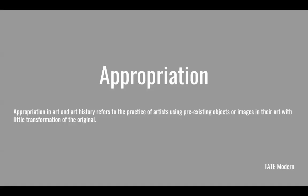Today we are talking about appropriation. This is a hotbed topic, and I'm really asking each of you to come up with your own understanding of where you think it is okay and where maybe sometimes you don't think it's okay. There is no directive from this class on how you need to feel about this topic — I'm asking you to come up with that on your own. The Tate Modern definition: appropriation in art history refers to the practice of artists using pre-existing objects or images in their art with little transformation of the original.